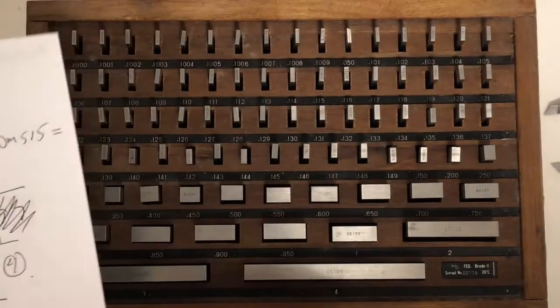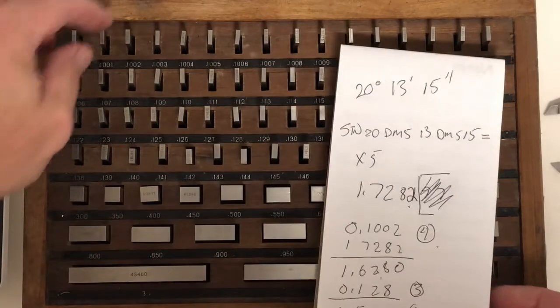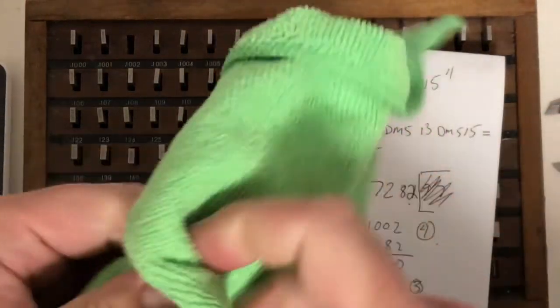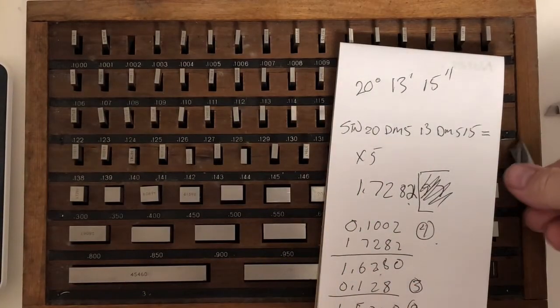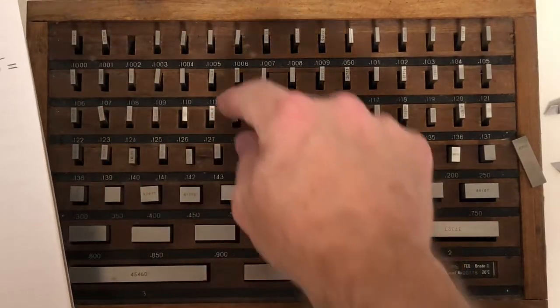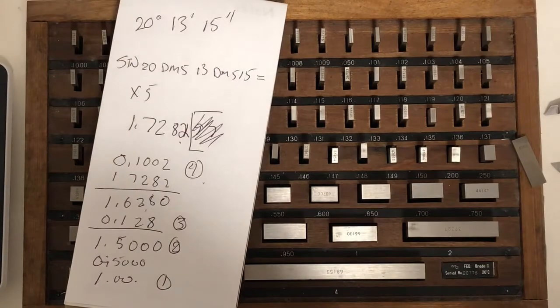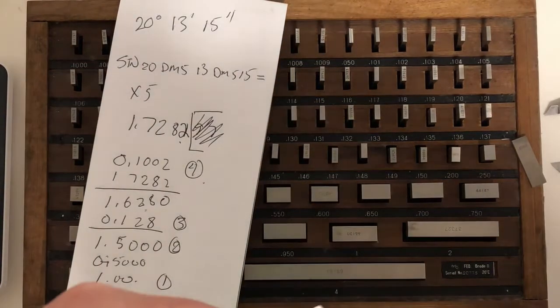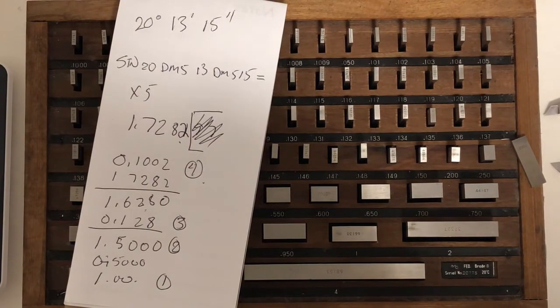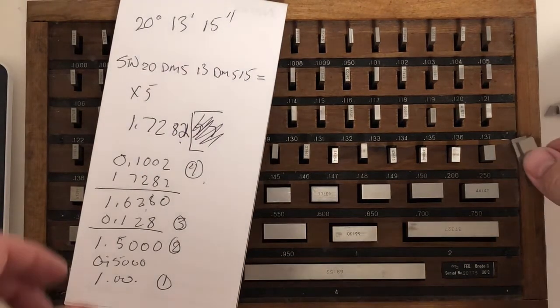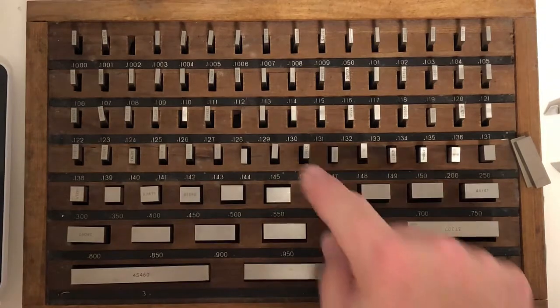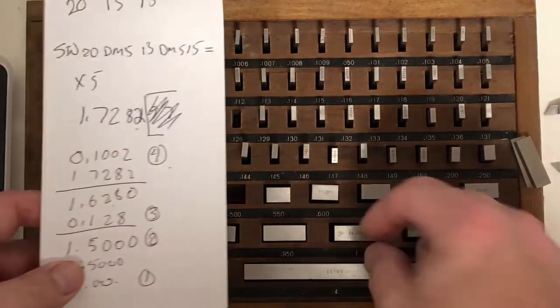So we need the smallest block first, which we're going to run into, and we're going to say two tenths. So right here, there's a two, 100 and two tenths. I'm going to clean the block off. Then we're going to use 128, 128. A lot of grime on these ones. And we're not going to talk about conditioning stones or any of those other things. We can talk about them in class. Then we need a half inch block,